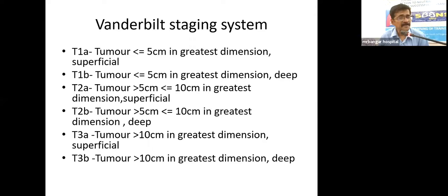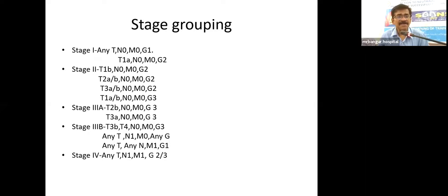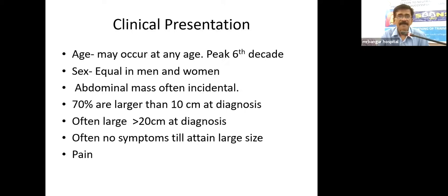Apart from AJCC, there is the Vanderbilt staging system: T1a is tumor ≤5 cm and superficial, T1b is deep tumor of same dimension, T2 is 5–10 cm (a: superficial, b: deep), T3 is more than 10 cm. In Vanderbilt staging, nodal involvement is grouped as Stage 3B rather than Stage 4 as in AJCC.